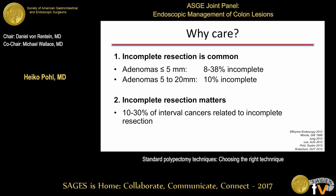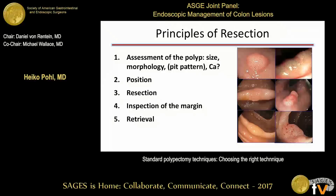Why do we care? Incomplete resection is actually pretty common—we're not as good as we think at taking off those polyps. Adenomas up to five millimeters are incompletely removed in up to 30% of cases, and medium to large adenomas are incompletely removed 10% of the time. Incomplete resection matters because patients may develop interval colorectal cancers after colonoscopy, and up to 30% of those post-colonoscopy cancers may be related to an incompletely removed polyp.